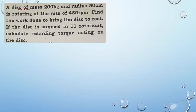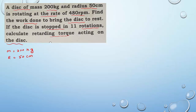The first question: a disk of mass 200 kg and radius 50 centimeter is rotating at the center at the rate of 480 rpm. Find the work done in bringing the disk to rest. So we can write down the givens: mass is 200 kg and radius is 50 centimeter, which equals 0.5 meter.